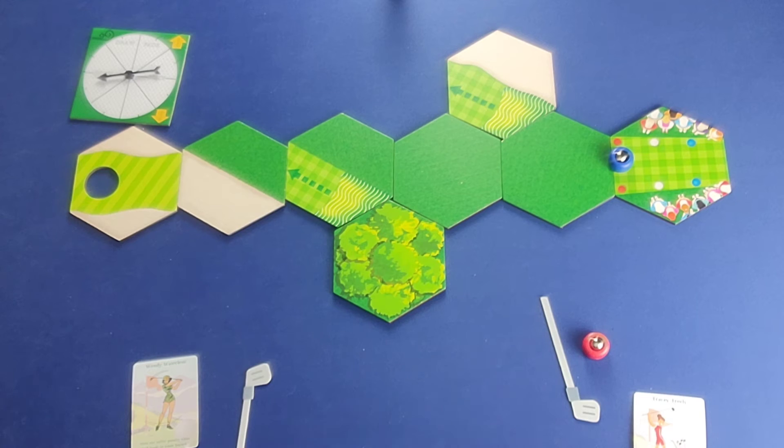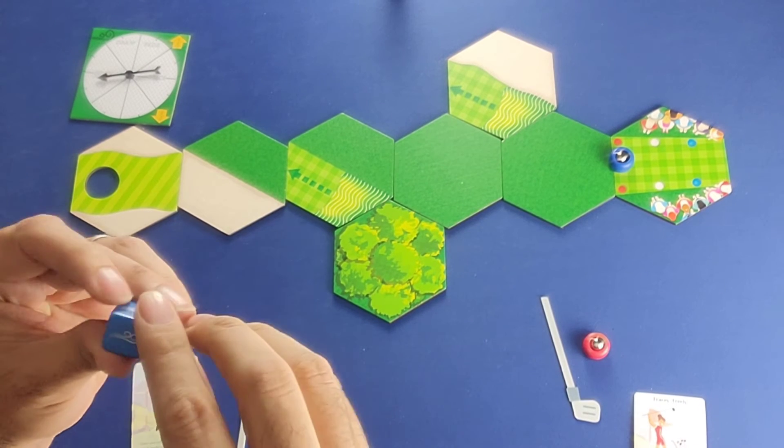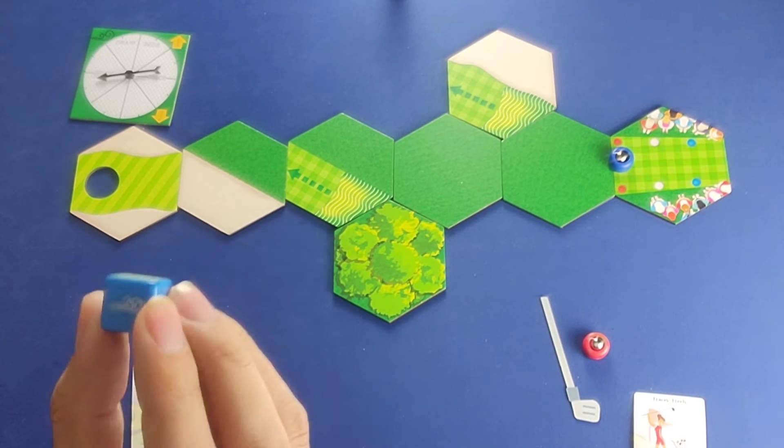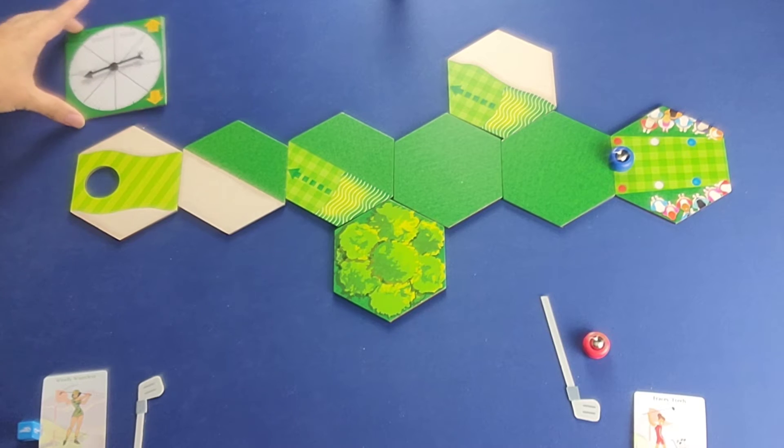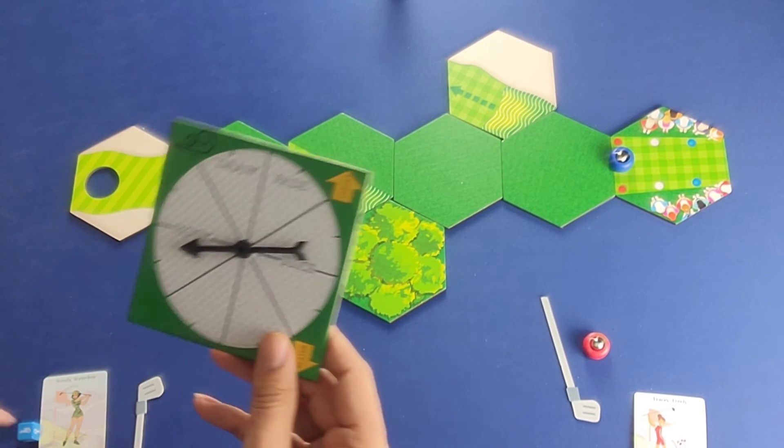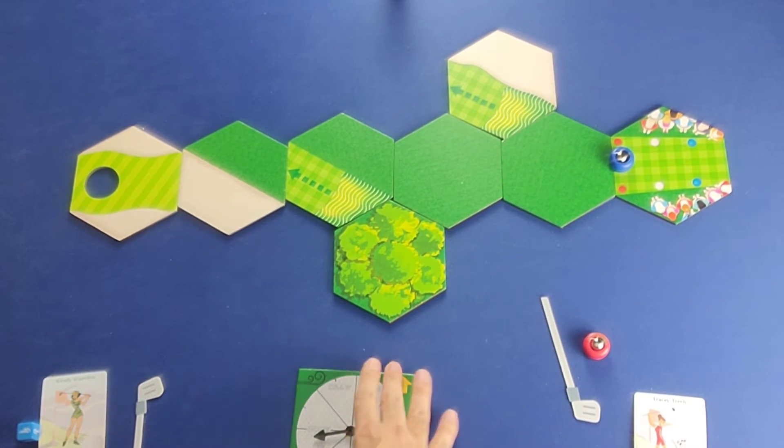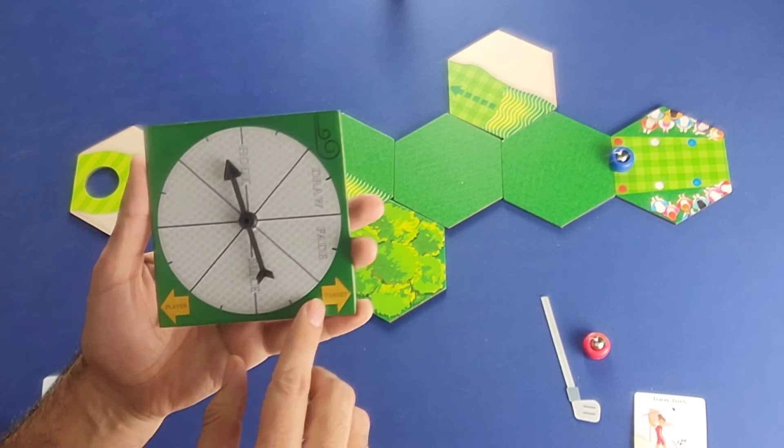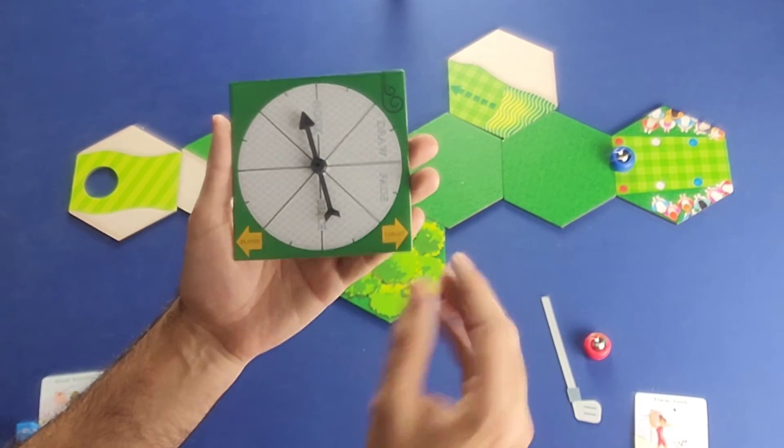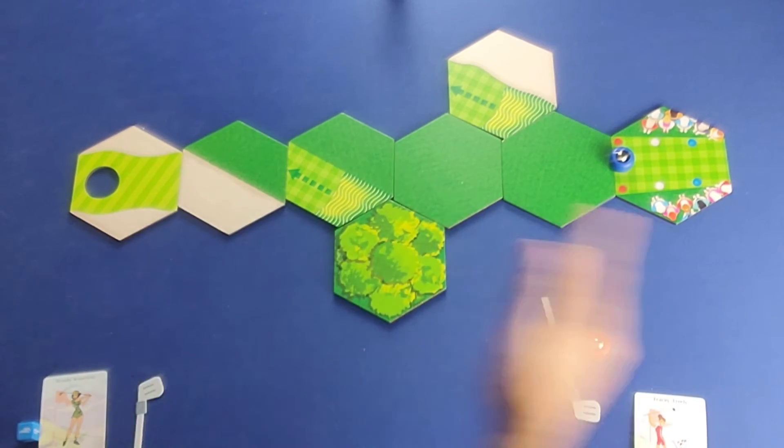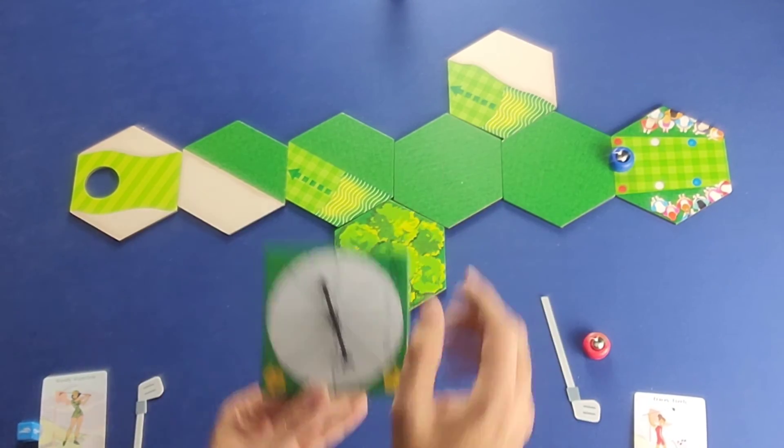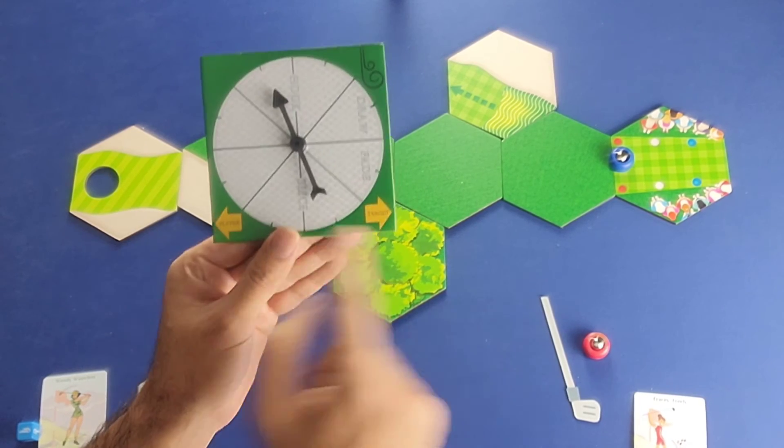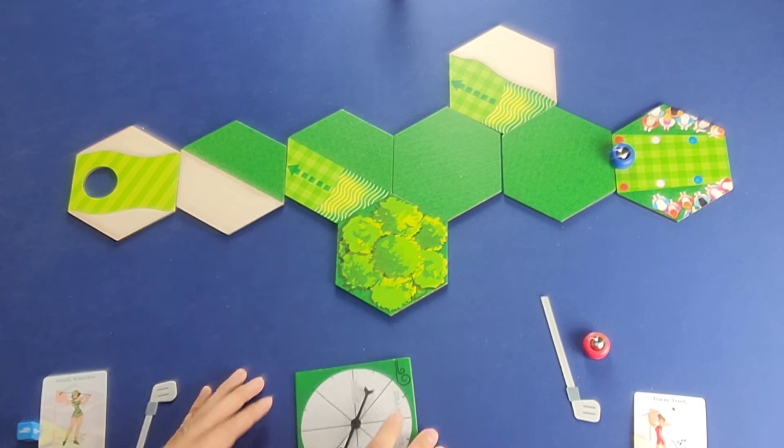which will impact the movement of the ball by one ball space. However, this dreaded double wind here is actually going to move the ball two ball spaces away from where you aim it to. So the next thing a player does to determine the conditions and the impact is they're going to spin this spinner here. And you should always align the spinner so that the two arrows are pointing in the direction that the ball is being shot. And since we're playing horizontally here, we're going to have the arrows facing left and right. And now we're going to spin the spinner here.